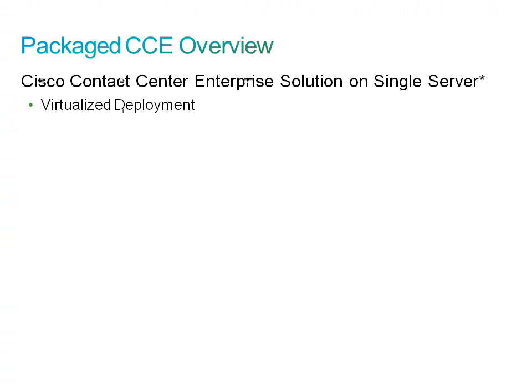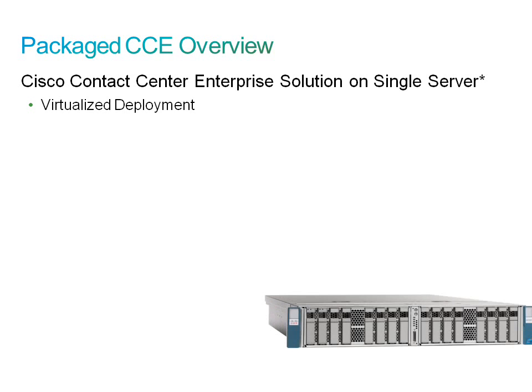Package CCE delivers Cisco Contact Center Enterprise on a single unified computing system, the UCS C260 series server. Due to the redundancy requirement, two UCS C260 servers will be required for deployment, commonly referred to as Side A and Side B. It is a predefined and bounded solution, which reduces pre-sales time since no design is necessary. It provides a robust, tested solution made up of five components.